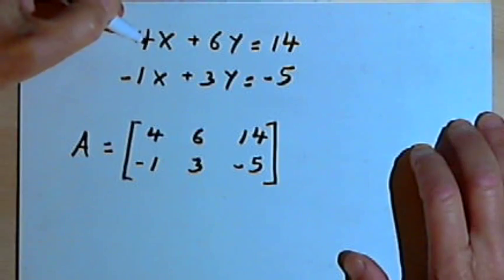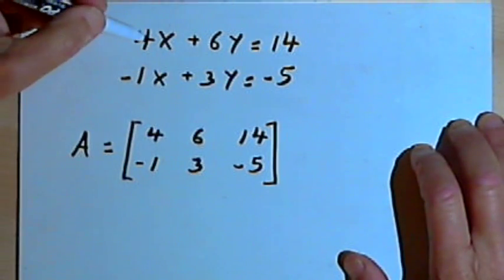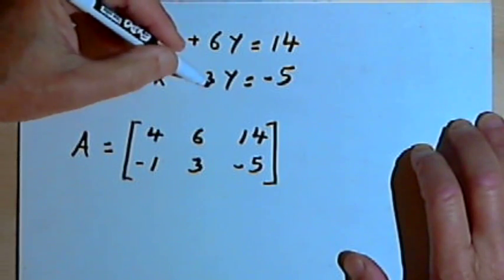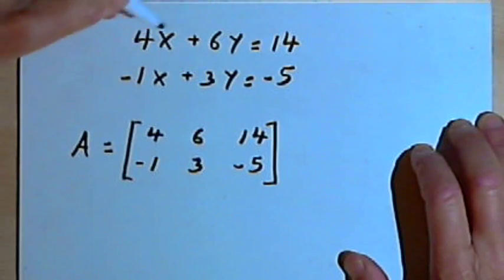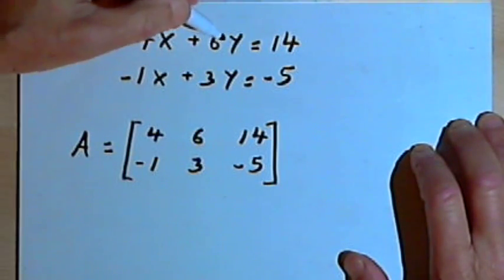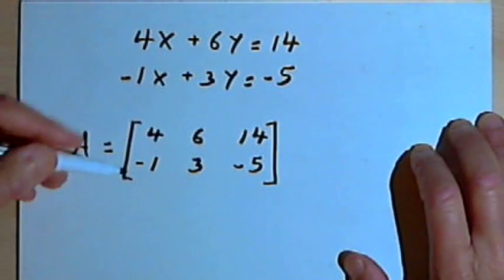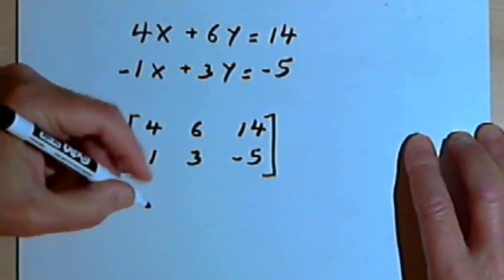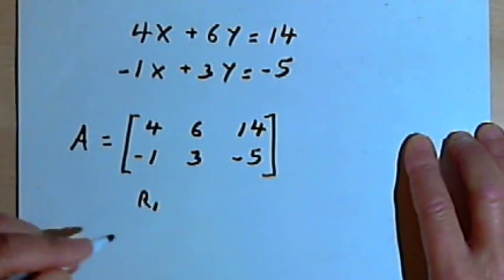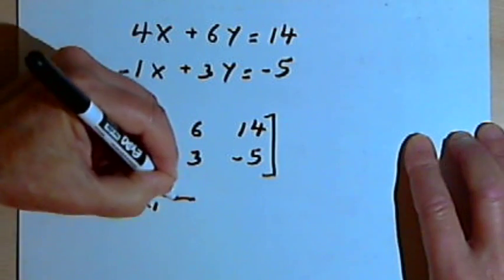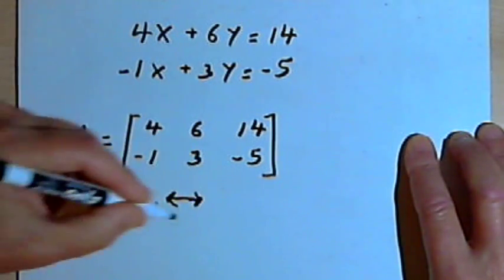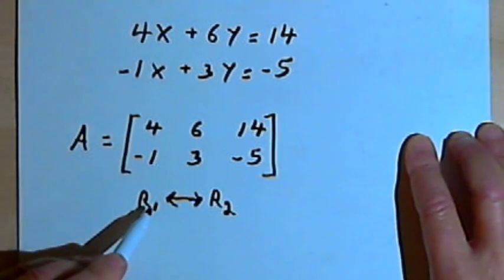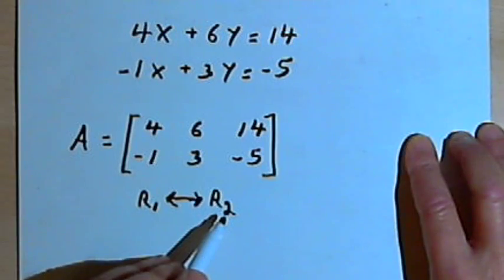When you deal with a system of equations, you know that you could swap the order you write the equations in and it wouldn't matter. We could have started with negative 1x plus 3y equals negative 5, and then had 4x plus 6y equals 14 second. We can also swap rows in a matrix. To show that, I'll use this notation: r sub 1, then a double-headed arrow, and r sub 2. This means row 1 and row 2 are going to swap positions.